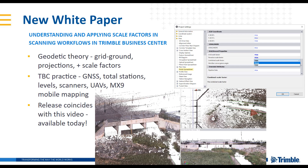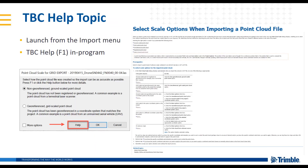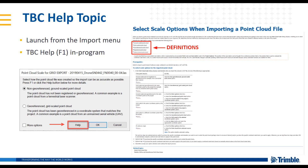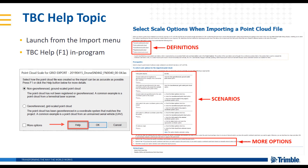The release of this white paper coincides with this video and the release of TBC version 5.3. Also available are the extensive TBC help topics — search for 'select scale options when importing a point cloud file' to bring up that help topic, or in the import menu itself press the TBC help button. That help topic covers definitions of the terms discussed in this video, common and more specific scenarios, as well as the more options checkbox in Trimble Business Center.